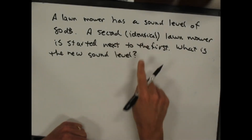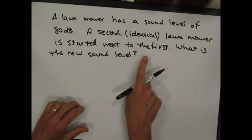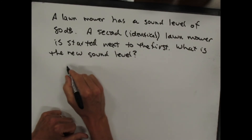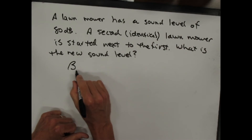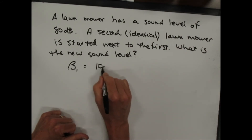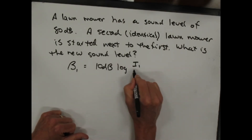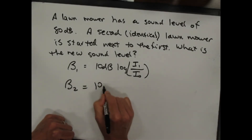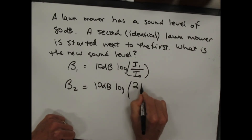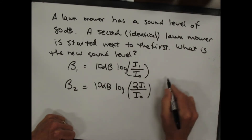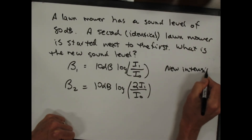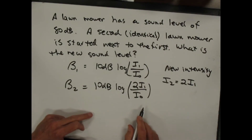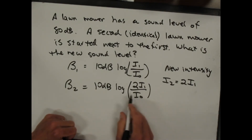Let's do a decibel problem. A lawn mower has a sound level of 80 decibels. A second identical lawn mower is started next to the first — what's the new sound level? You might think it's 160 decibels because you add them, but that's not what you add. The intensities add. So beta one equals 10 decibels times the log of I one over I zero. For beta two, since I have two lawn mowers, I have 10 decibels times the log of 2 I one over I zero.